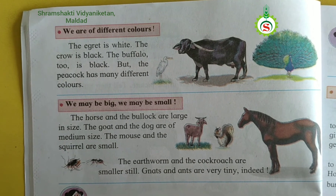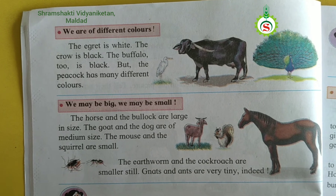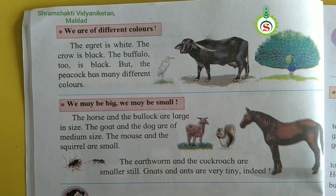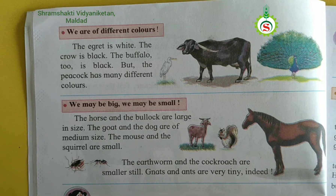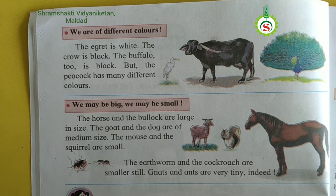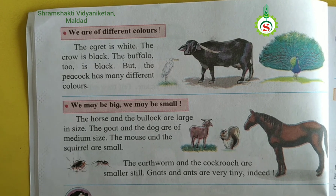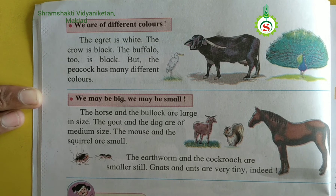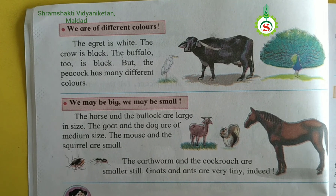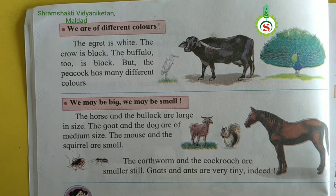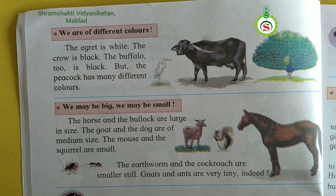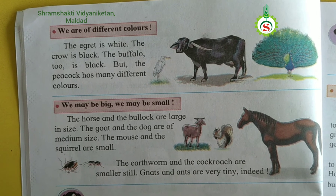We see here some animals are big in size, some are medium-sized, and some are small in size. The horse and the bullock are large-sized animals. Some animals are large in size, such as buffalo, elephant, and bullock. The goat and the dog are medium-sized animals. Like a fox and sheep, also medium-sized. Some animals are small in size, like a squirrel and rat.